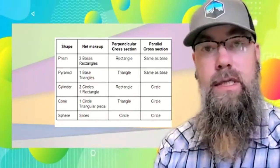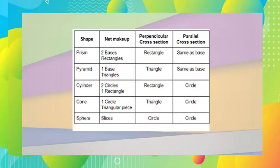On the left side is the shape itself, the 3D shape. So we have prisms, pyramids, cylinders, cones, and spheres. Their net makeup is the shape of their sides and their faces.